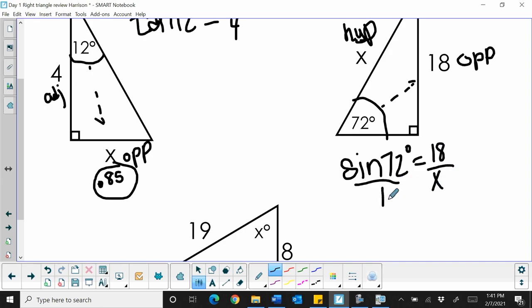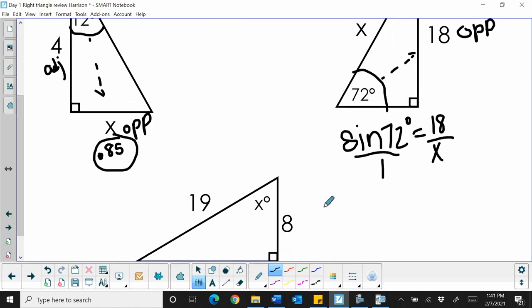Okay, this one's going to be a little bit trickier because our variable's in the denominator. But let's cross-multiply. So 18 is equal to x times sine of 72. Well, to find x, I'm going to have to divide both sides by sine of 72. So in our calculators, we're going to have to type in 18 divided by the sine of 72.